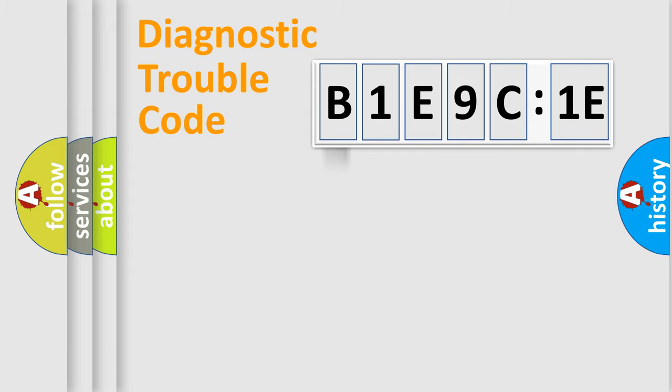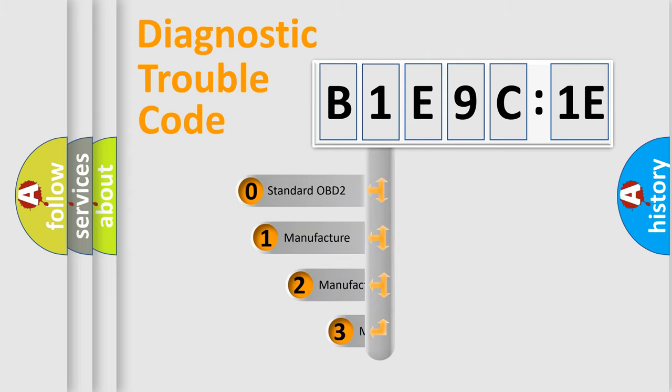Powertrain, Body, Chassis, and Network. This distribution is defined in the first character code.